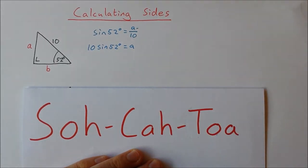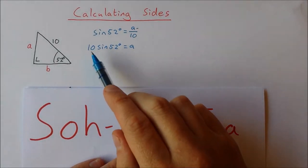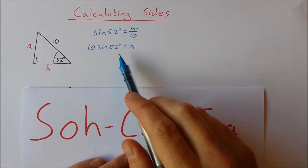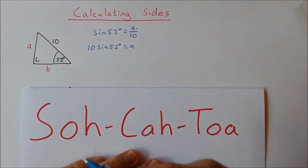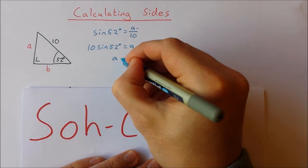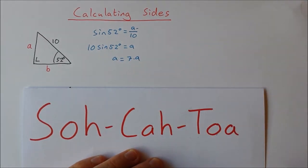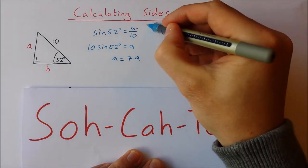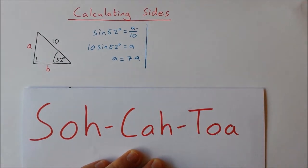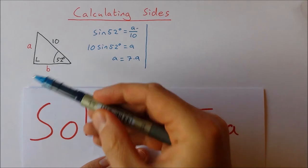Now I can type that into my calculator. Type it in as it is: 10 sine 52, and press equals, and you'll get a = 7.9, correct to one decimal place. Okay, let's try and calculate 'b'.